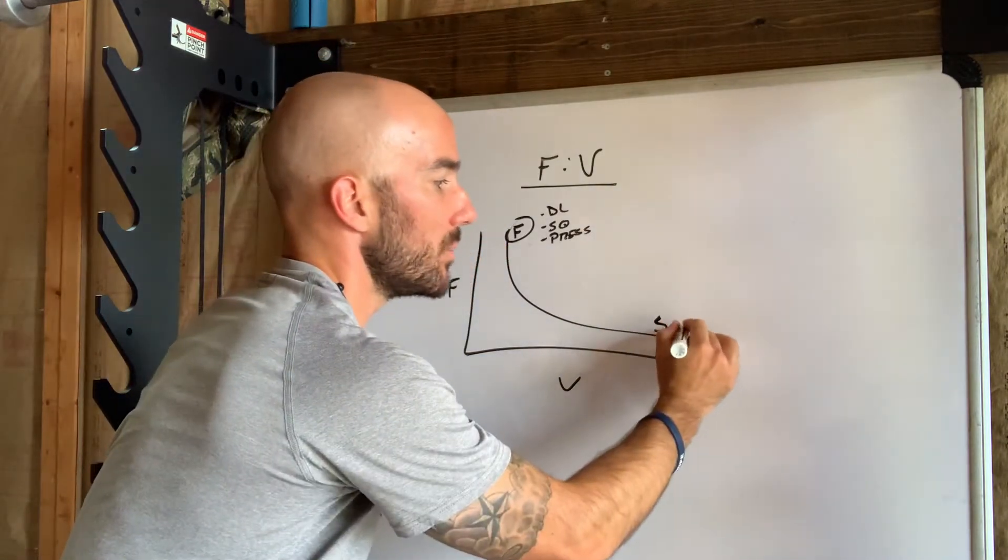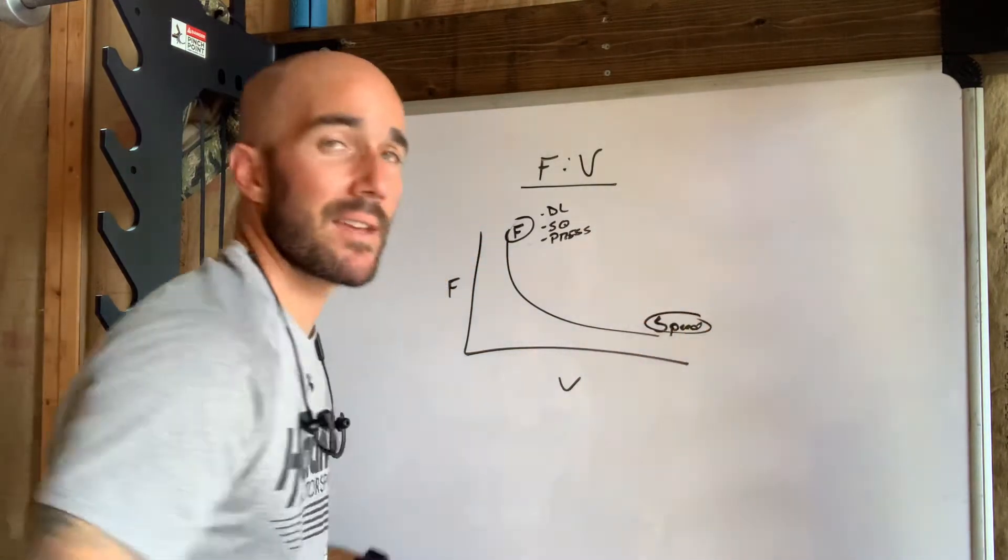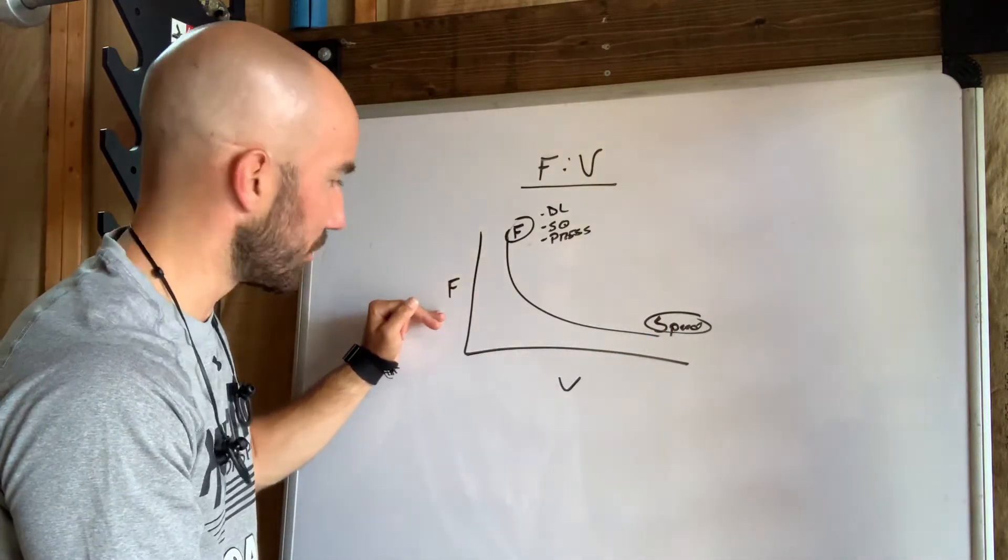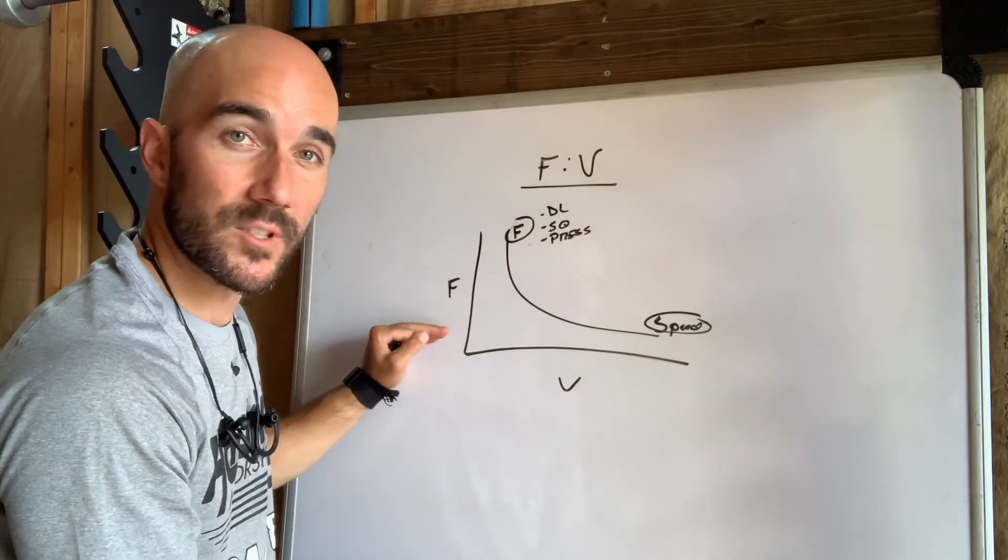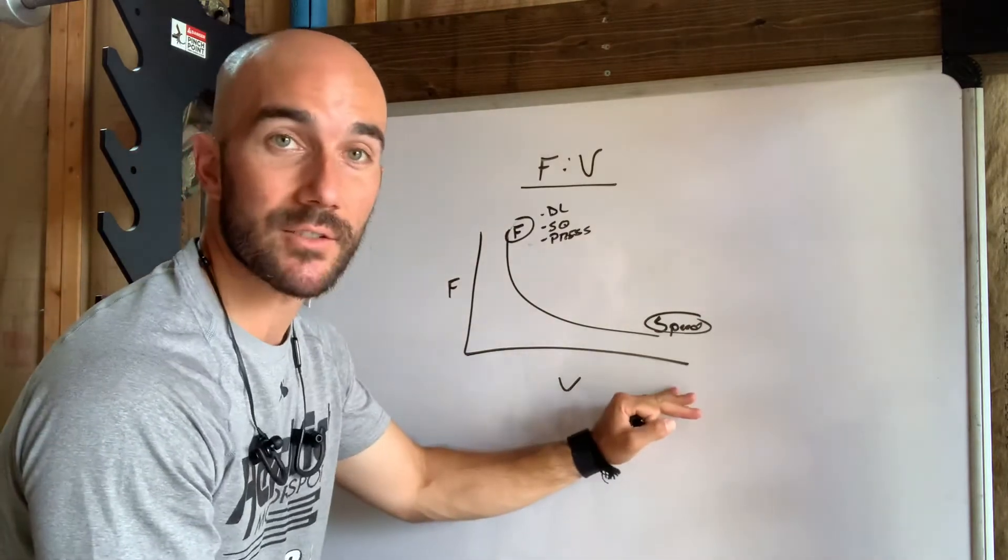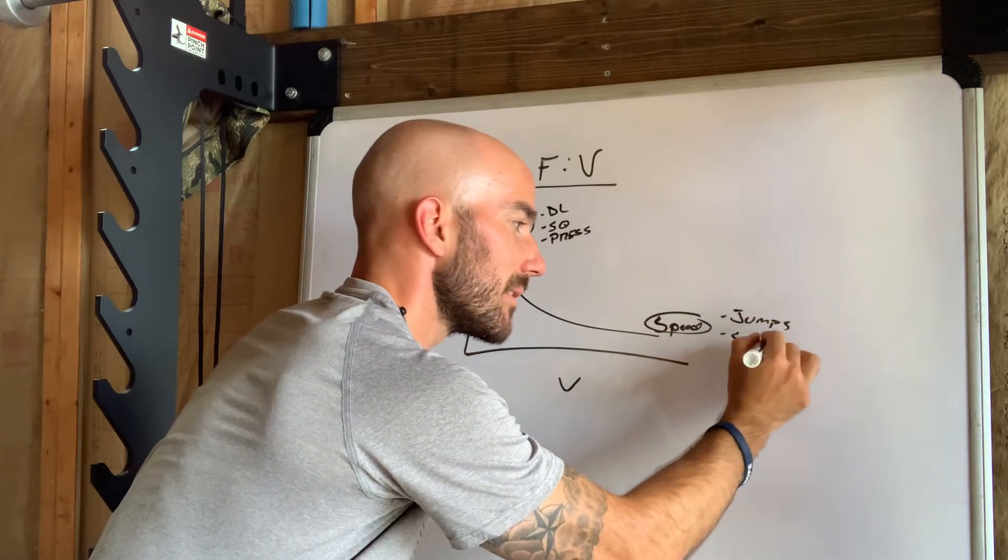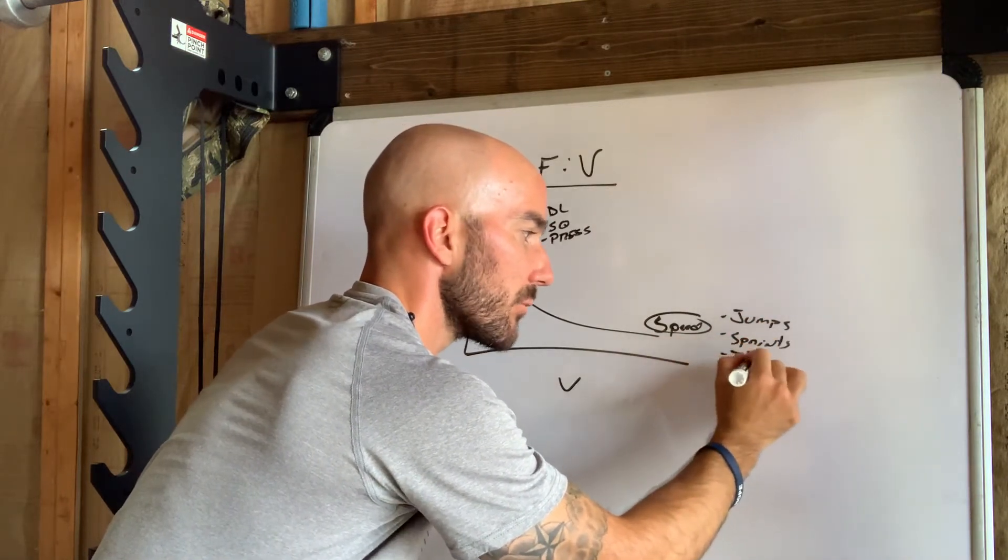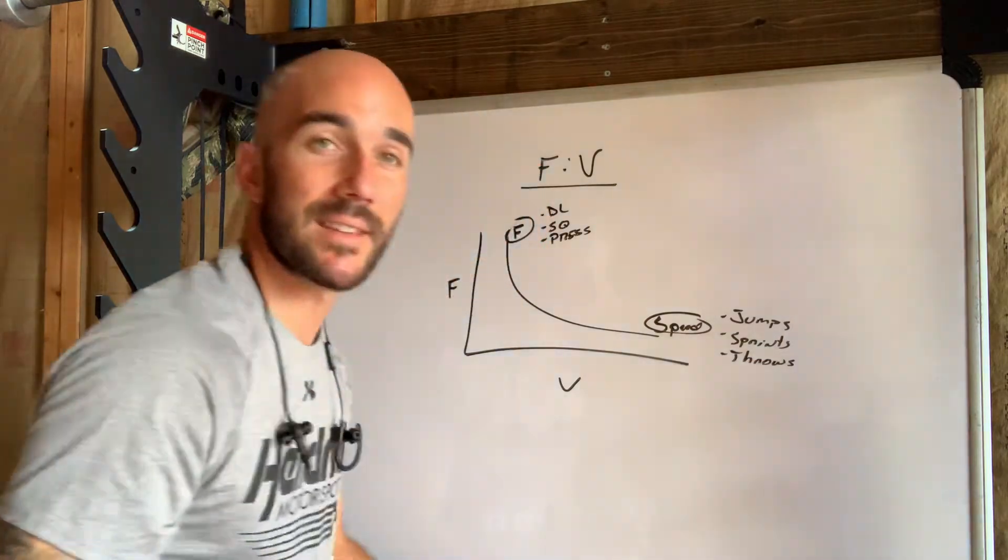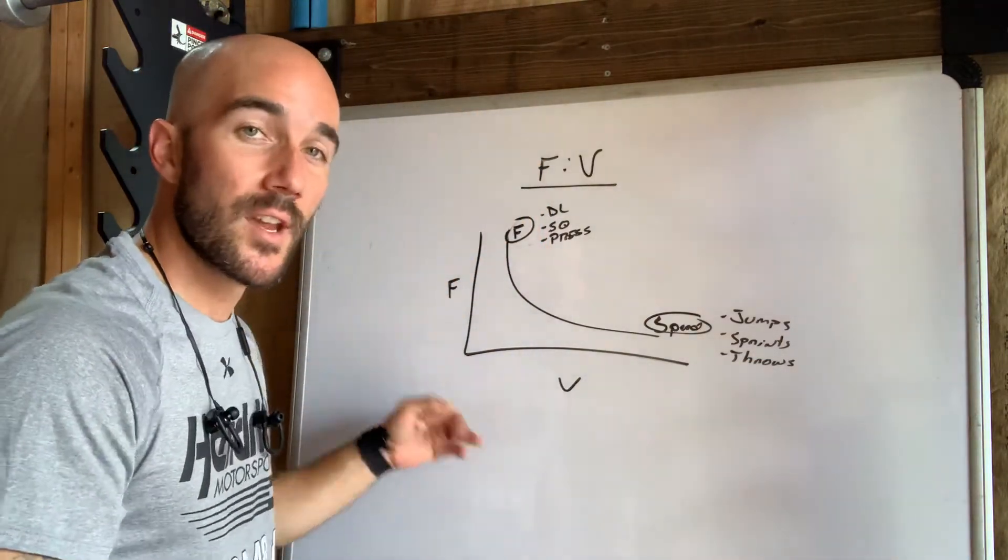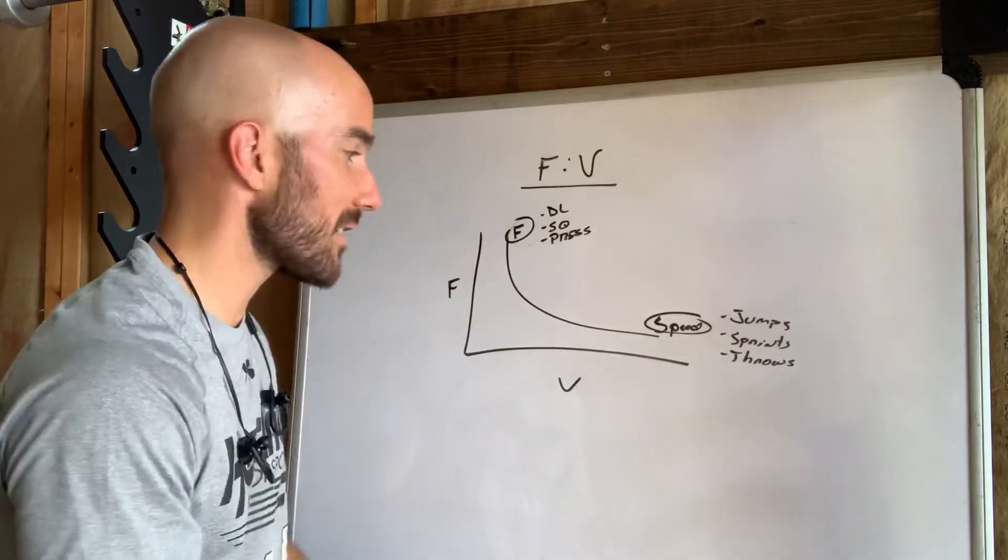On the opposite side would be speed. Things on this side, I don't have enough time to produce as much force here, but subsequently they're going to be a lot faster. Things here could be jumps, sprints, throws, or any type of variation like that. Minimal resistance. I'm not creating a ton of force, but they're going very, very fast.